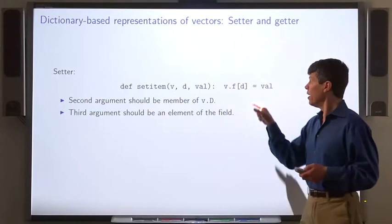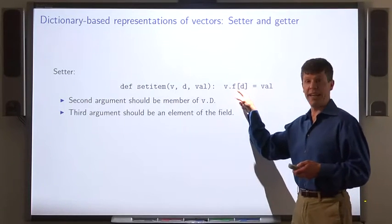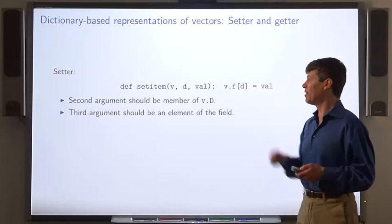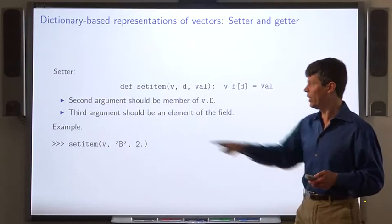And it simply changes the dictionary, V dot F, so that D maps to val. So we can use it in this way.